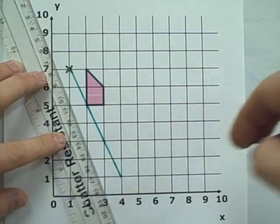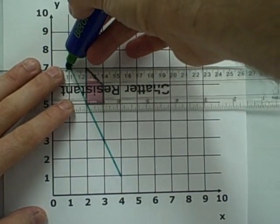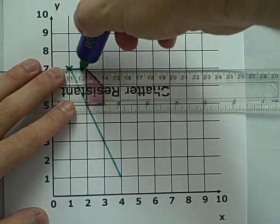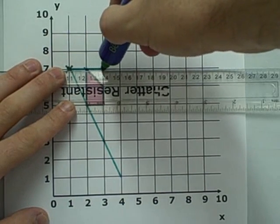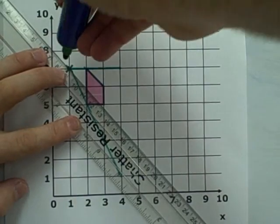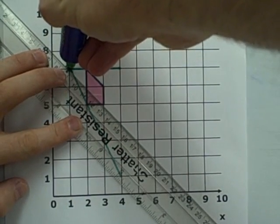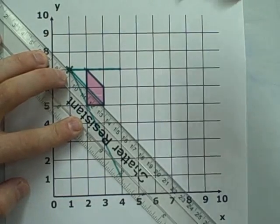Which we enlarge to right 3 and down 6. For this one, we have to go right 1, so that becomes right 3. For this one, we have to go right 2 and down 2, which will become right 6 and down 6.